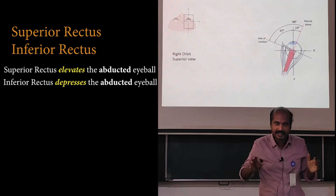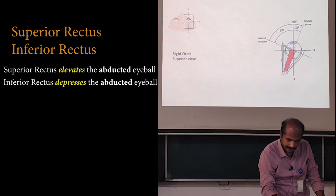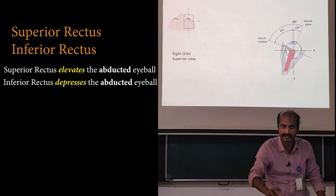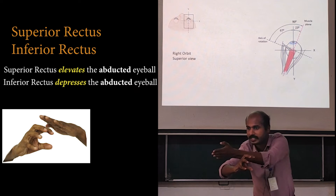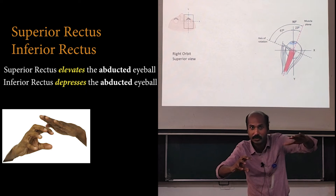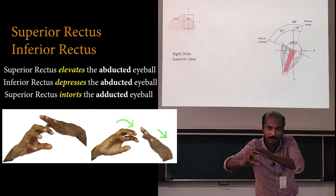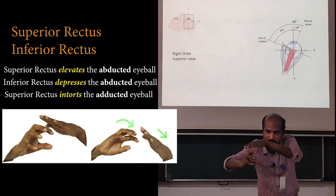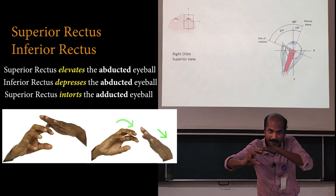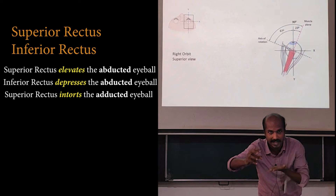Now imagine that the eyeball is adducted — the cornea is adducted to this position, almost perpendicular to the line of pull of the superior rectus. If the visual axis is now almost 90 degrees with the line of pull, when the superior rectus contracts, it will cause intorsion of the eyeball. Intorsion is the 12 o'clock position turning inwards. In the adducted eyeball, when the inferior rectus contracts, it will cause extorsion.